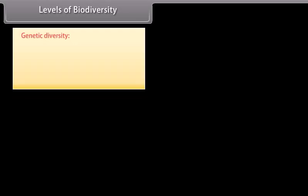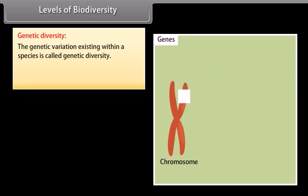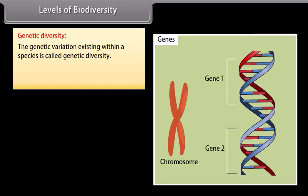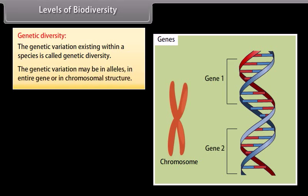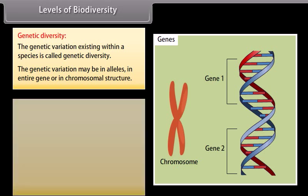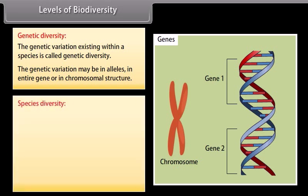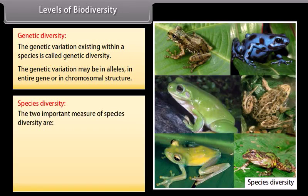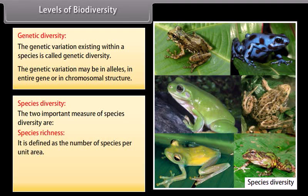Levels of Biodiversity. Genetic diversity: the genetic variation existing within a species is called genetic diversity. The genetic variation may be in alleles, in entire genes, or in chromosomal structure. Species diversity: the two important measures of species diversity are species richness, defined as the number of species per unit area.